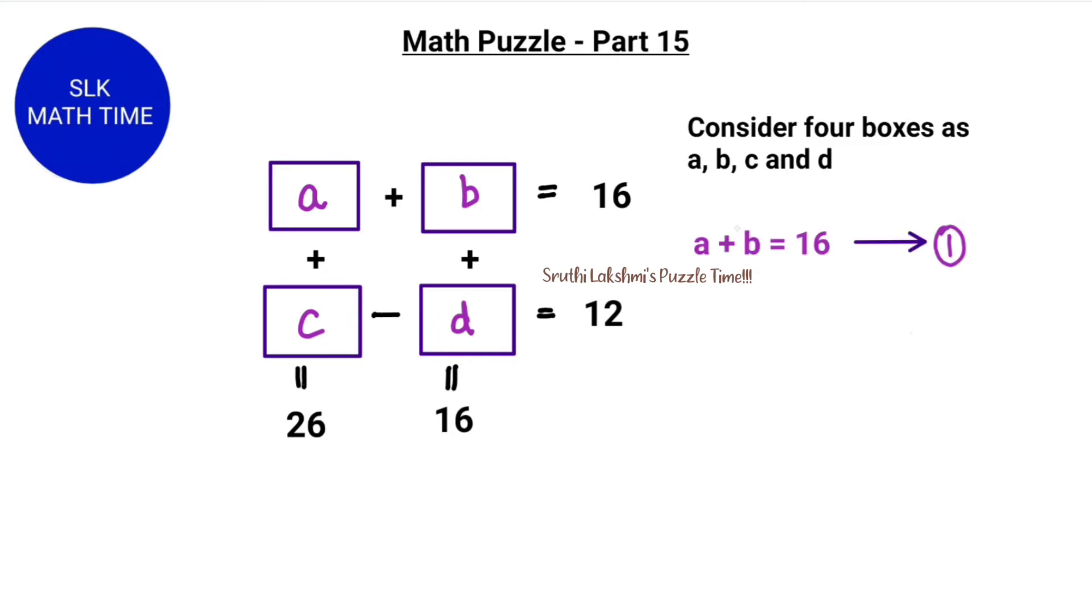So we know that A plus B is 16, C minus D is 12, A plus C is 26, and B plus D is 16.